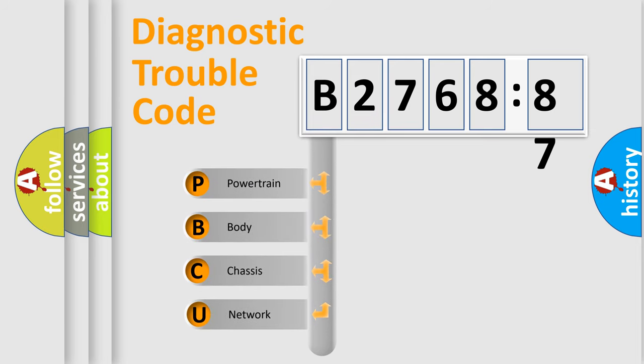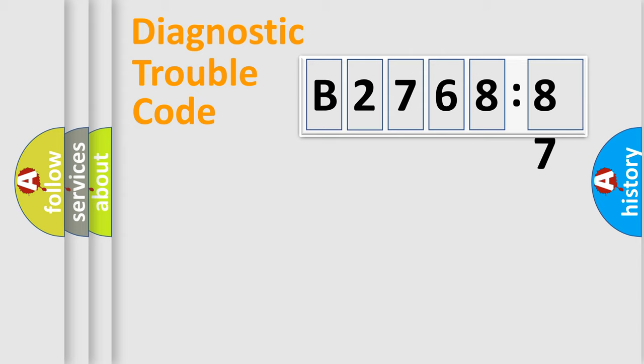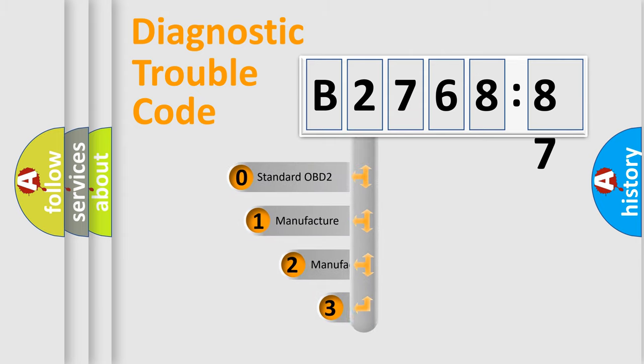First, let's look at the history of diagnostic fault code composition according to the OBD2 protocol, which is unified for all automakers since 2000. We divide the electric system of automobile into four basic units: Powertrain, Body, Chassis, and Network.